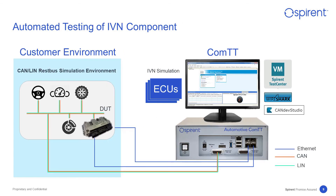Just like for IVN component testing, you can also use SPIRINT Test Center Virtual running on the COMTT appliance to generate Ethernet traffic. With the open source CAN Dev Studio software, you can generate CAN traffic and check in parallel for the function and performance of the devices on both channels.